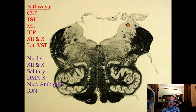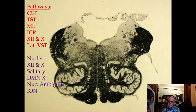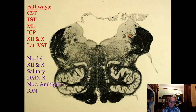The lateral vestibulospinal tract, traveling through medial and inferior vestibular nuclei here, is the powerful extensor pathway overactive in decerebrate posturing — patients in a coma with arms and legs extended straight. Behind here is the fourth ventricle, and the material back there is the choroid plexus.